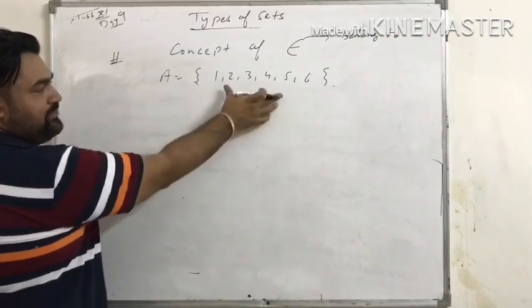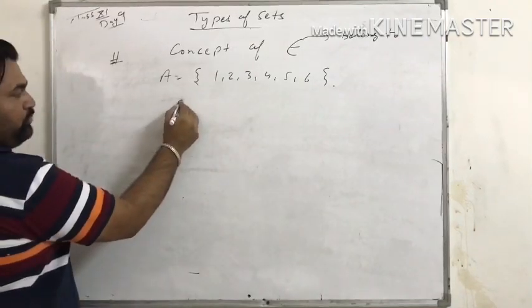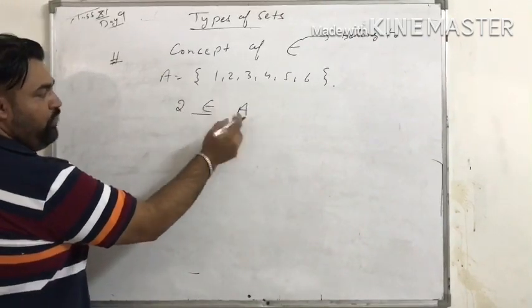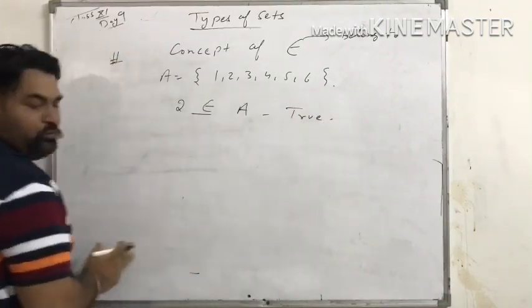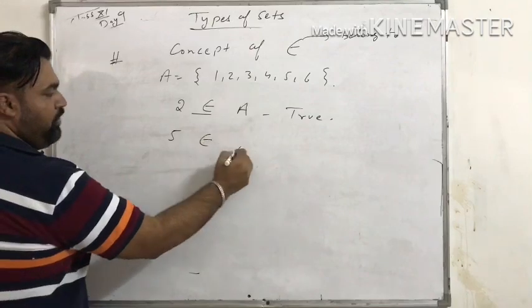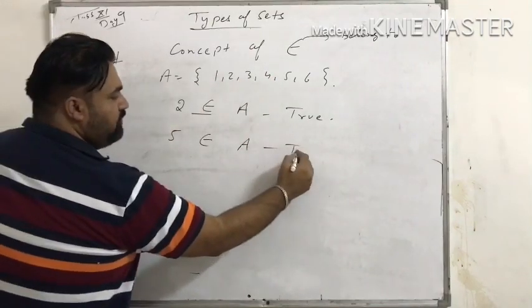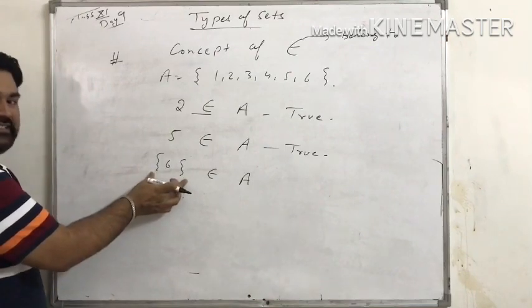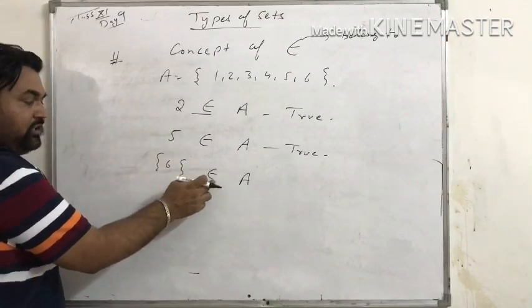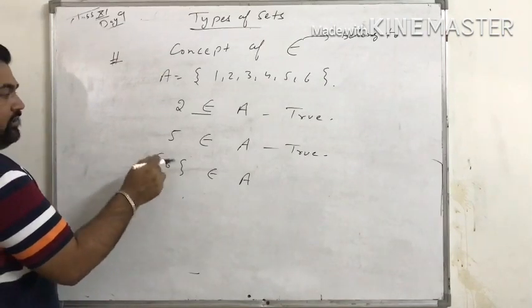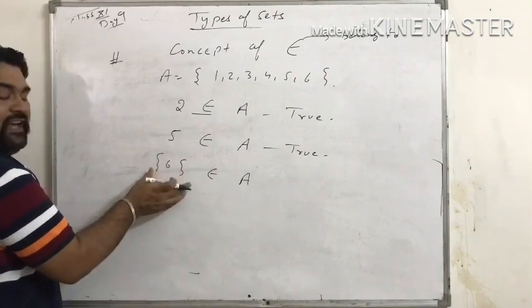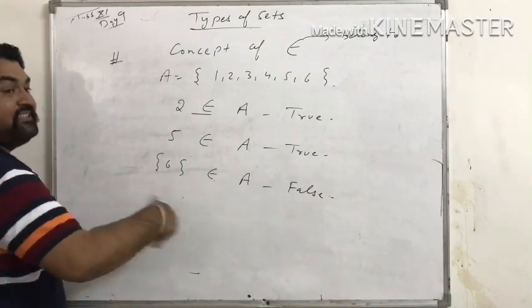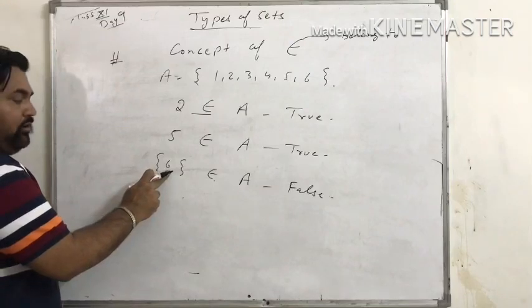So now, the elements of A are {1, 2, 3, 4, 5, 6}. Now, 2 ∈ A — 2 belongs to A, meaning 2 is an element present in A, so this is true. 5 ∈ A — 5 is an element present in A, so this is also true. But if we write a set using curly braces with belongs to, that is false, because the belongs to sign connects an element, not a set.